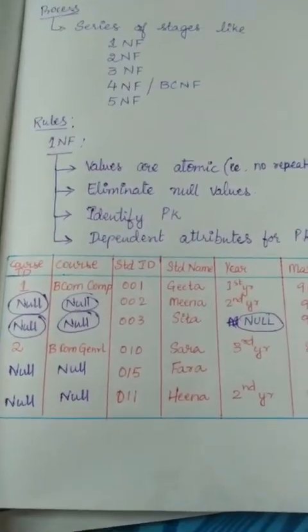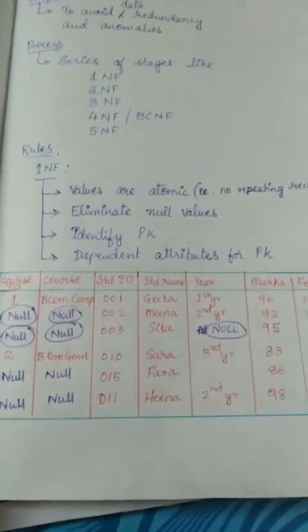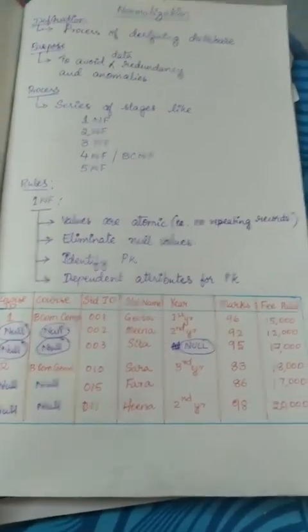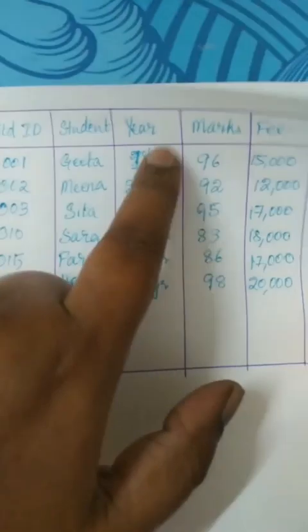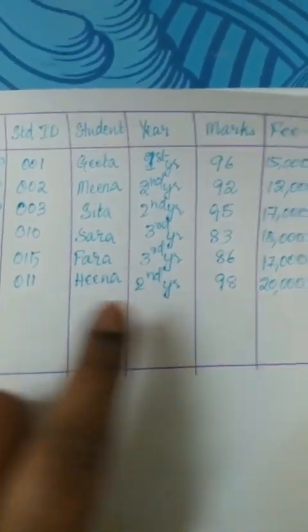I will show you after doing the First Normal Form how this table is going to look. Here you can see this is how the data will look — all the repeating null values have been removed. Earlier there were null values; they have been removed, and we have added all those data appropriately to the columns. So this is the First Normal Form. The table is now called as having passed the First Normal Form.